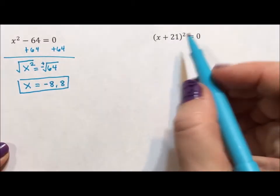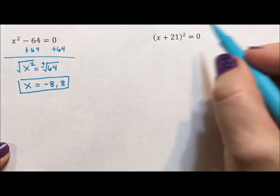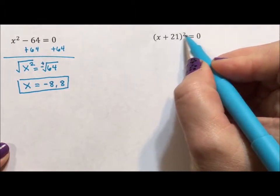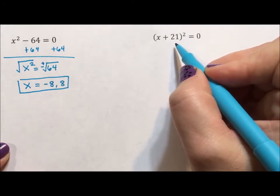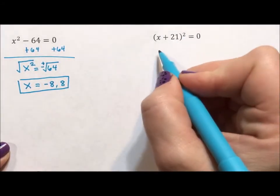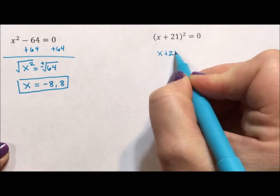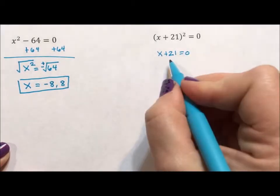For the second one, anything squared—sorry, something squared equaling zero has to be zero. There's no other number multiplied to itself that will give us zero, which means that x plus 21 has to be zero. It's the only way it works.